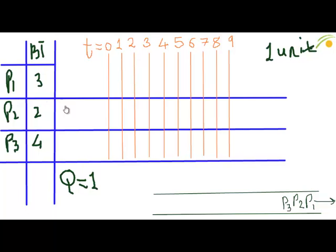Now, as the process starts, P1 will perform its operations for one unit of time, that is one quantum. The remaining burst time of P1 will be 2. It has performed its operations and it will join the queue back. Here, it will be P1.